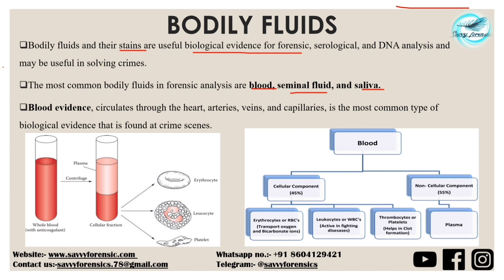Blood circulates throughout the body through the heart, arteries, veins and capillaries, and it is the most common type of biological evidence found at a crime scene. When we take whole blood and centrifuge it, the supernatant portion we get is the plasma, while the sedimented portion is the cellular fraction. Blood can thus be divided into two parts: the non-cellular component — that is plasma, constituting approximately 55% — and the cellular component of suspended cells, constituting approximately 45% of the total blood concentration.